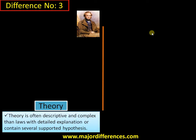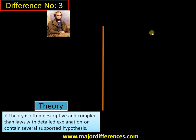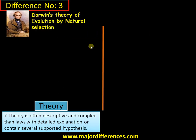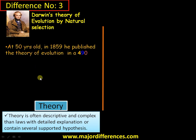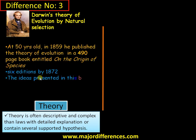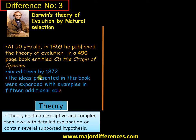Difference number three: a theory is often very descriptive and complex compared to a law, with detailed explanations supported by many hypotheses. Take Darwin's theory of evolution by natural selection. At 50 years old in 1859, he published the theory of evolution in a massive 490-page book entitled 'On the Origin of Species,' which explains all his journeys through different continents, specimens collected, and so on. It went to six editions by 1872.